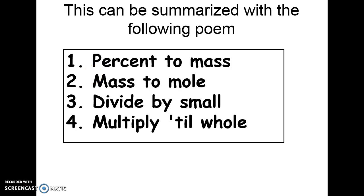In summary, the steps to finding an empirical formula are: one, change any percents to mass; two, change from mass to moles by dividing by the molar mass; three, divide by the smallest answer; and four, multiply until whole to get rid of any fractions.